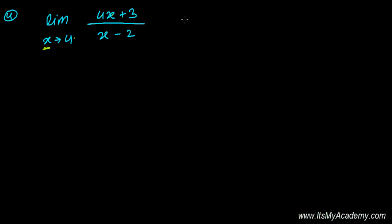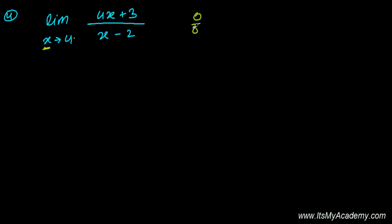I'm not getting something like a 0 over 0 form, or any number divided by 0. These are indeterminate forms. So whenever you're going to get this kind of result, you need to remember that we have to work first on the function — we need to simplify it so that we will not get the indeterminate 0 by 0 form.